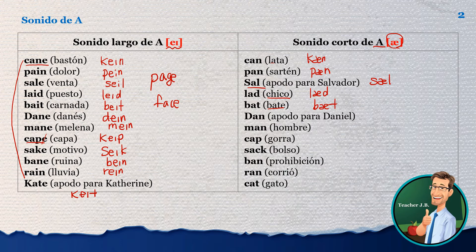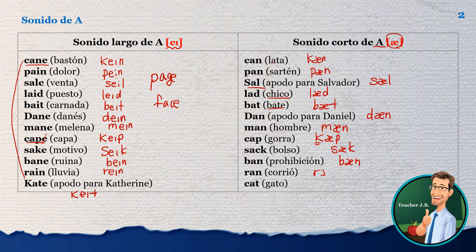Apodo para Daniel — that's 'Dan,' dan. An hombre — man. Gorra — cap. That's the short A sound. And bolso — sack. And prohibición — band. And carril — the past of run is 'ran,' ran. And gato — el gato is 'cat,' cat.